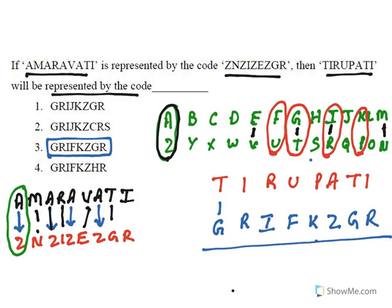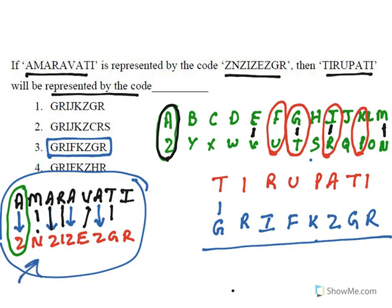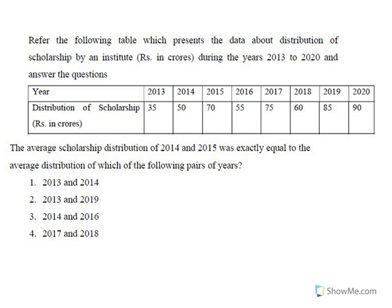It looks complicated, but first you need to understand the pattern — they have given Amaravati replaced with a code, you find the pattern, and once you get the pattern, you can apply it easily to any other word. Now let us look at the data interpretation questions. There will be certain data given, and based on that data, a set of questions follows.